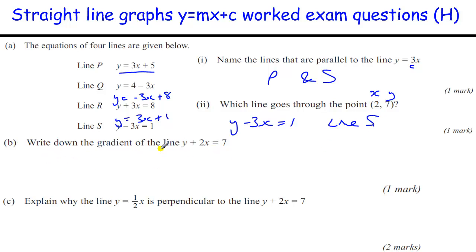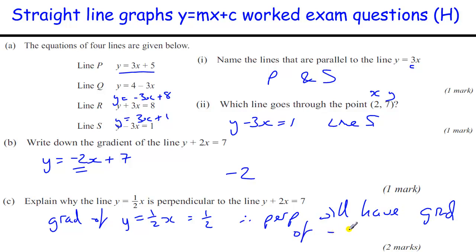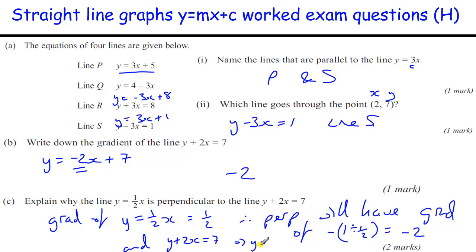Write down the gradient of that line — rearranging to y equals form gives a gradient of minus 2. Explain why y equals a half x is perpendicular to y equals 2x plus 7. The gradient of y equals a half x is a half. The perpendicular gradient is the negative reciprocal of a half, which is minus 2. And y plus 2x equals 7 is the same as y equals minus 2x plus 7, which also has a gradient of minus 2.